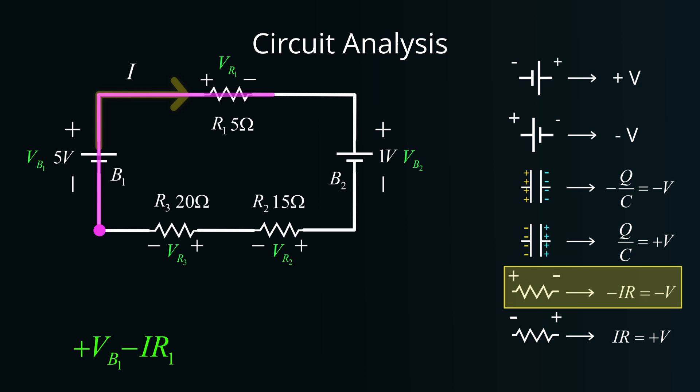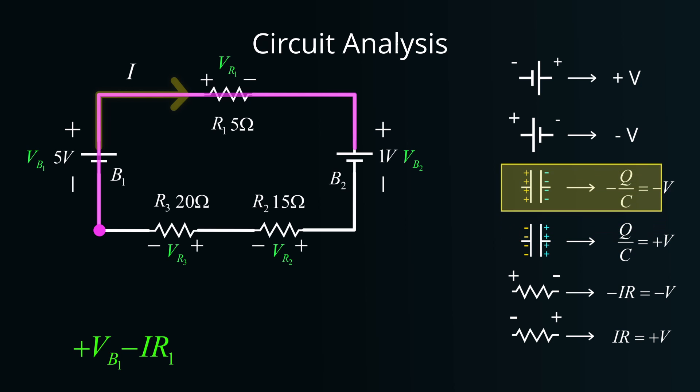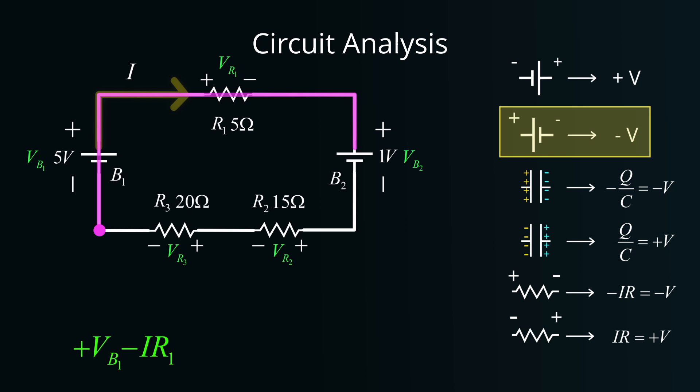Continuing our journey, we next come across the 1 volt battery. This time, we are moving from its positive terminal to its negative terminal. Using our earlier convention, this equates to a negative contribution, so we represent it as minus VB2.